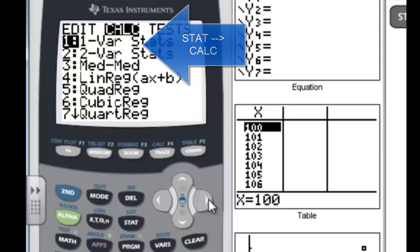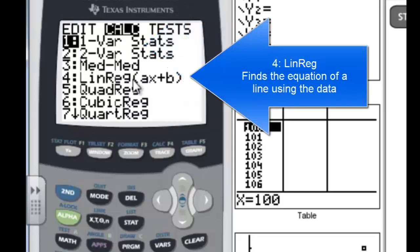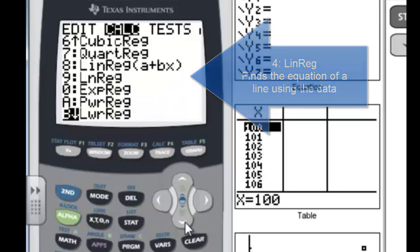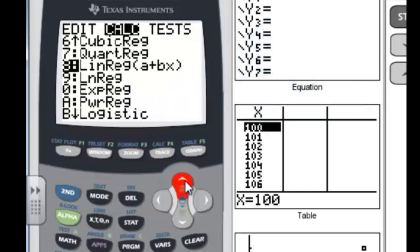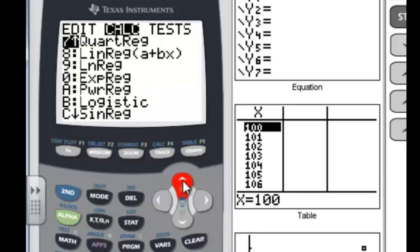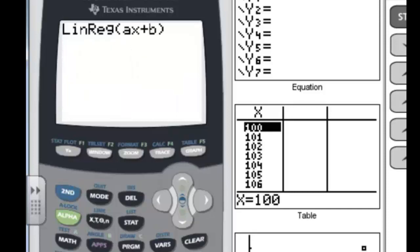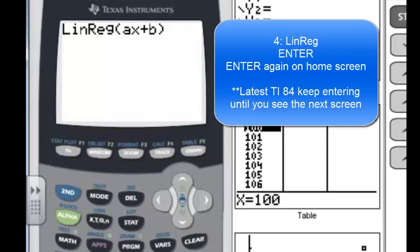And then choose whatever kind of regression we want. That would be starting with number 4. We've got linear regression, quadratic regression. But we want to use linear regression because we can see that it's definitely a line. So we're going to choose option 4, and I'm just going to press the number 4. And now it asks me linear regression. And you have to press enter to verify that's the regression you wanted. Press enter.